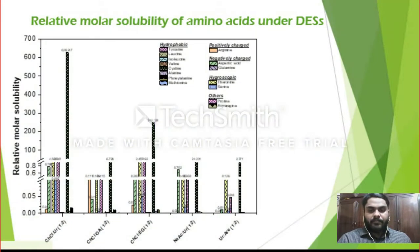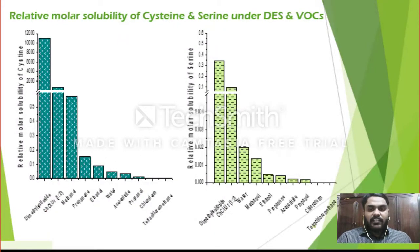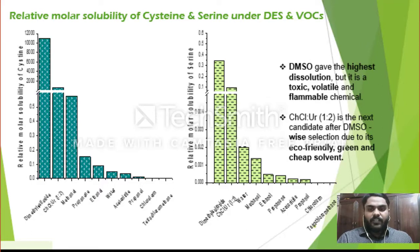In the results and discussion, the graph shows the relative molar solubility of 15 amino acids under several DES. From the data generated by COSMO-RS, cysteine is the most soluble amino acid in all 5 DES. Choline chloride and urea at a 1:2 mole ratio shows the highest dissolution capacity for cysteine and nearly all other amino acids. Comparing DES and volatile organic compounds, dimethyl sulfoxide has the highest dissolution; however, it is highly toxic for both humans and nature and goes against green technology. Therefore, choline chloride urea at 1:2 mole ratio is the next best candidate after DMSO, and is a wise selection due to its eco-friendly, green, and cheap properties.